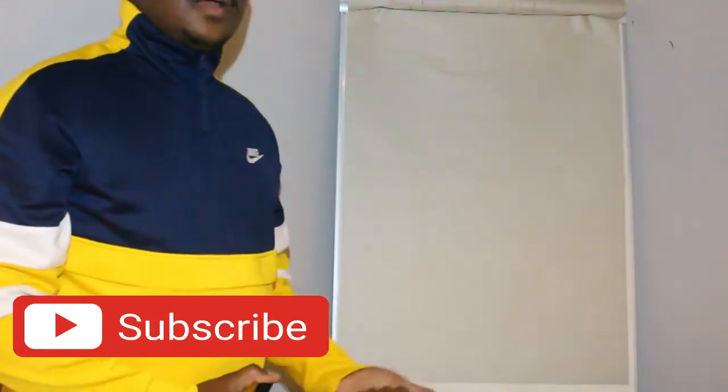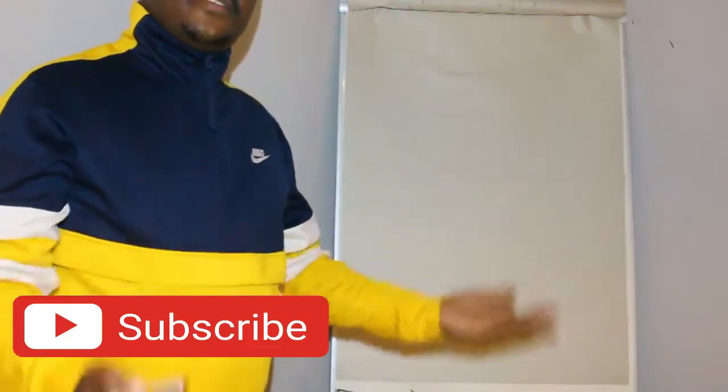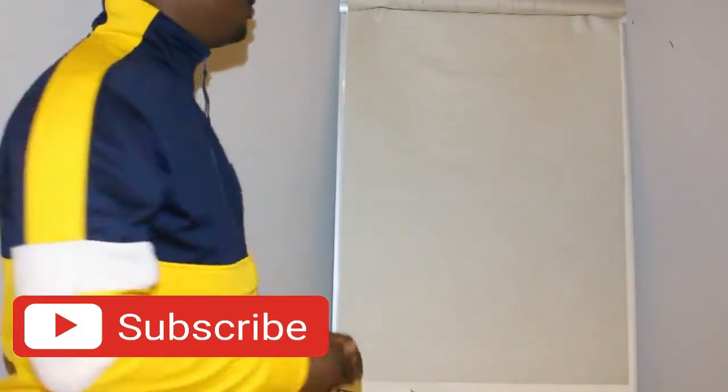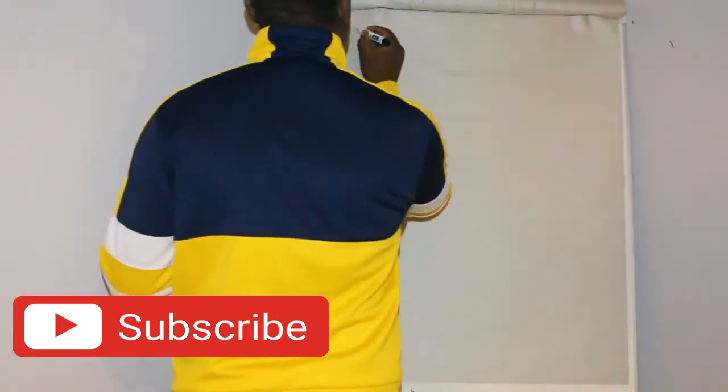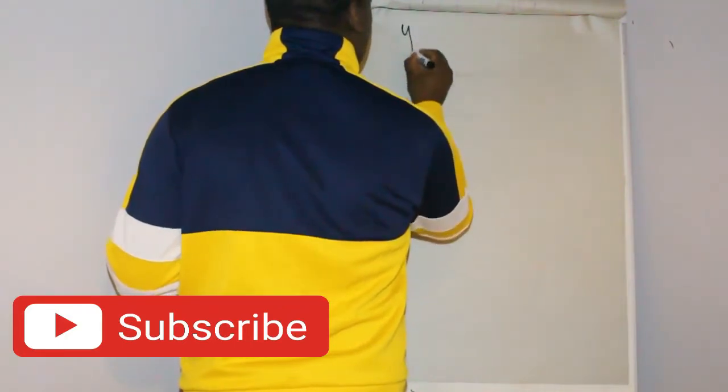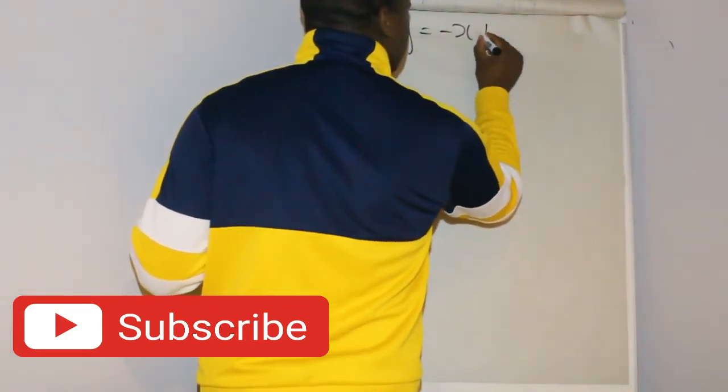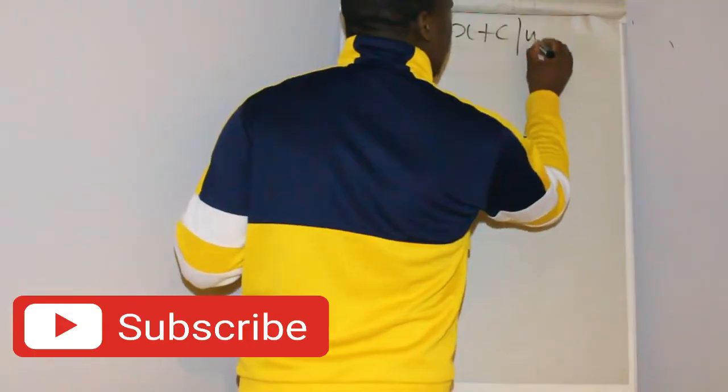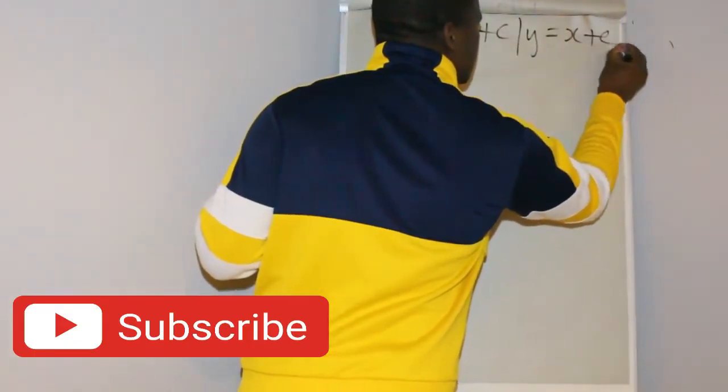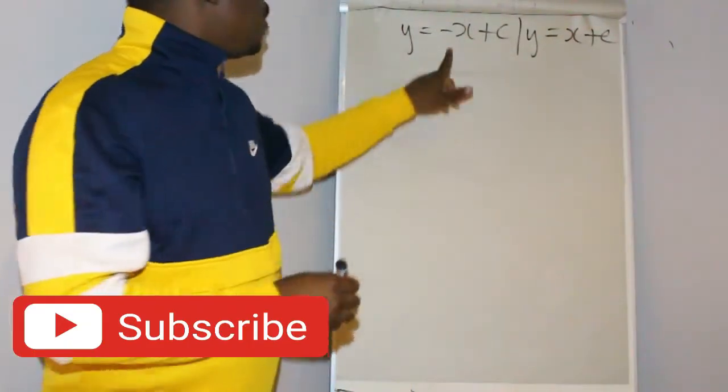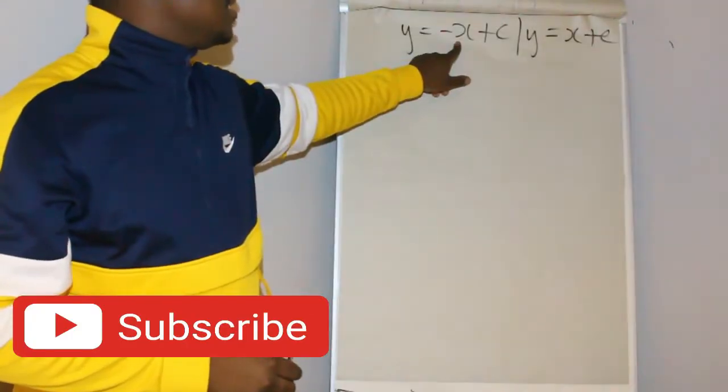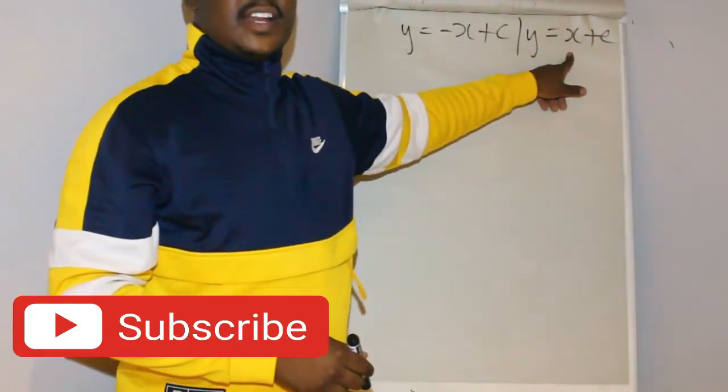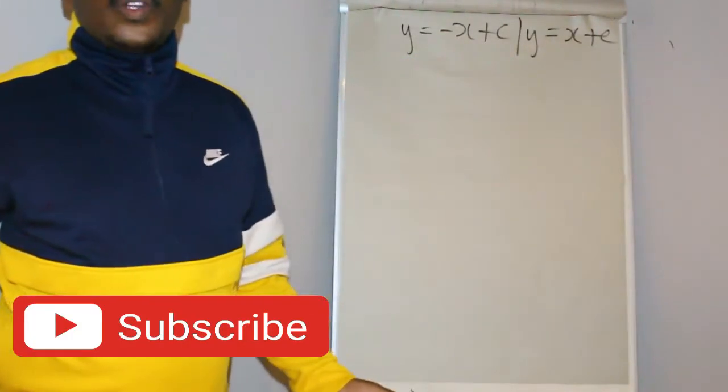A hyperbola has an axis of symmetry defined by two lines: y equals negative x plus c, or y equals x plus c. This one has a negative gradient and this one has a positive gradient. How do you know which one to use?